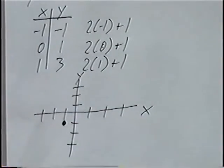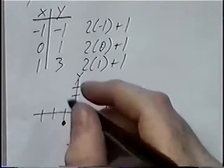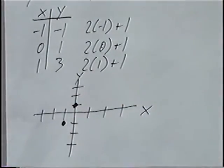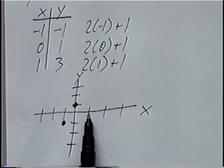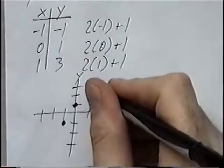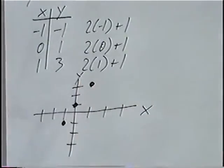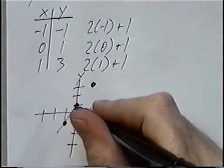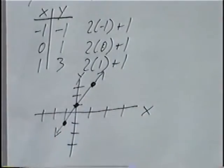The second point is zero, one — zero for x is in the middle, and positive one means one spot up. The last point is one, three — x is positive one and y is three spots up. When graphing these equations, all three points should line up in a straight line, and that would be the graph for the equation.